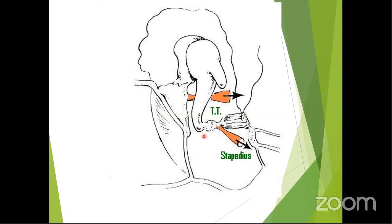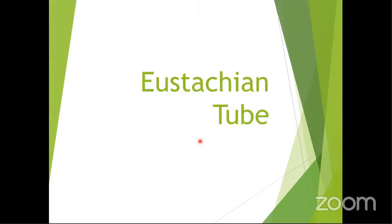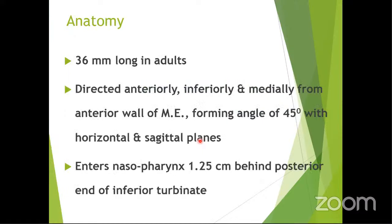The tensor tympani muscle, whenever there is a loud sound, pulls the tympanic membrane inwards, causing tension and reflecting sound back so it is not transmitted. The stapedius similarly protects the oval window, but in prevention of noise trauma or acoustic trauma, the stapedius plays a larger role than the tensor tympani.